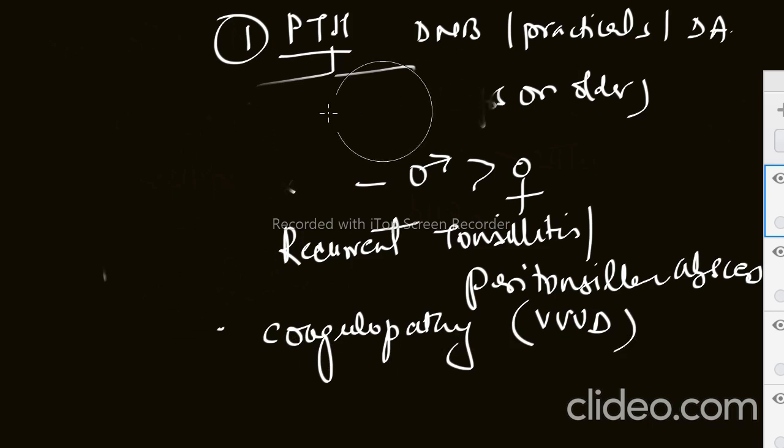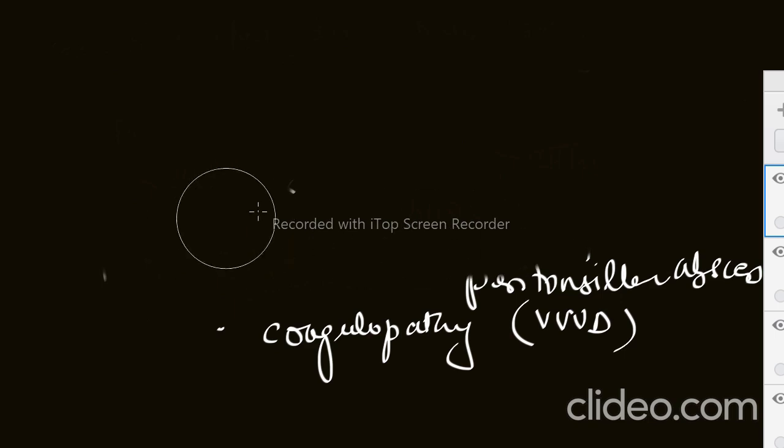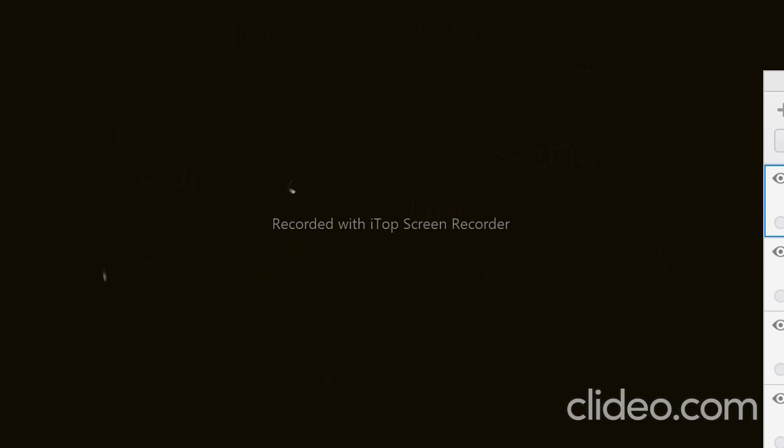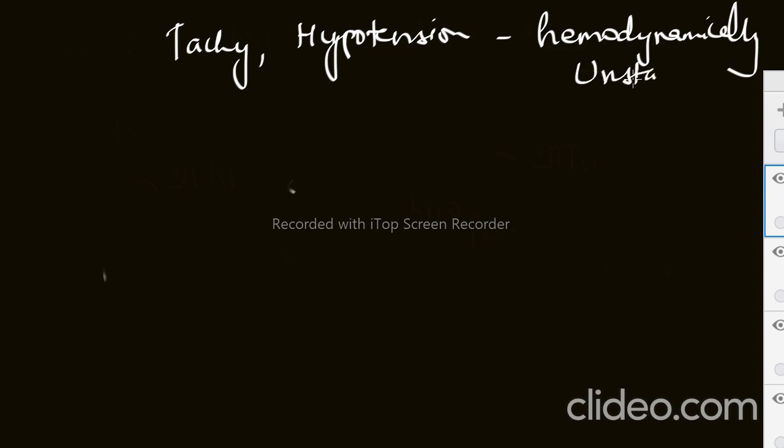In post-tonsillectomy bleeding, we saw the BP of the patient - the patient was hypotensive with tachycardia and hypertension, meaning the patient was hemodynamically unstable. For that, we need to optimize the patient before the OT. So why is it dangerous actually? What challenges as an anesthetist you can have?